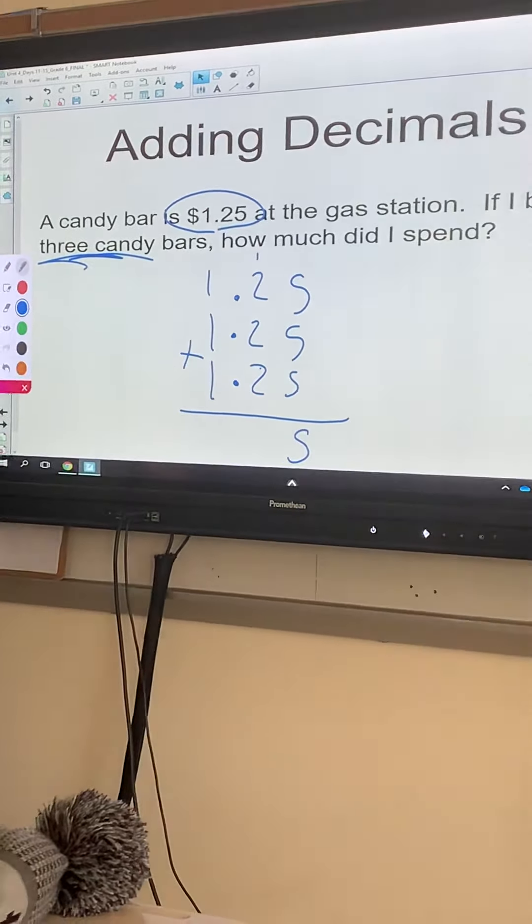This slide again—notice that the decimal gets its own line. Let the numbers fall into place. Now what you're going to see on today's Bitly is adding something that looks like $3.00. Remember, $3.00 can also be written as 3.00.